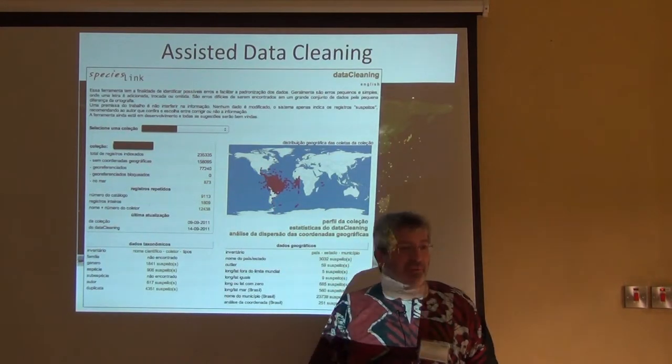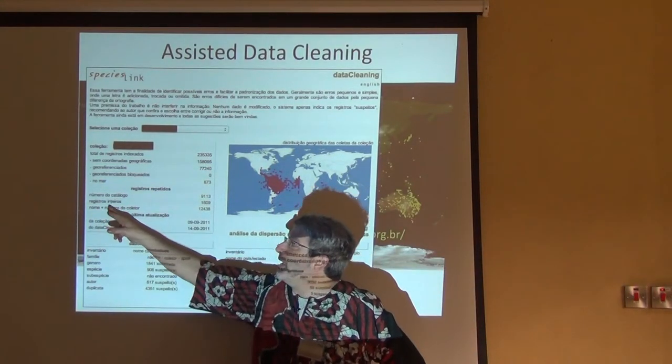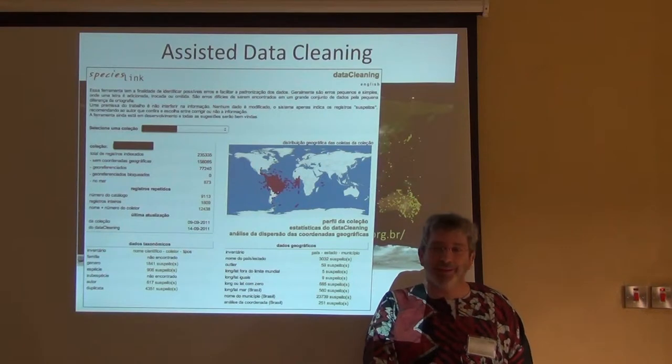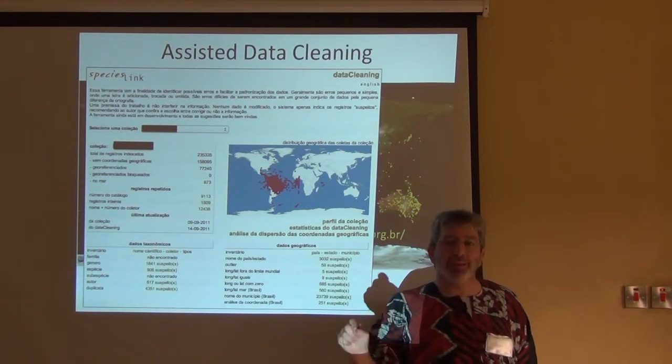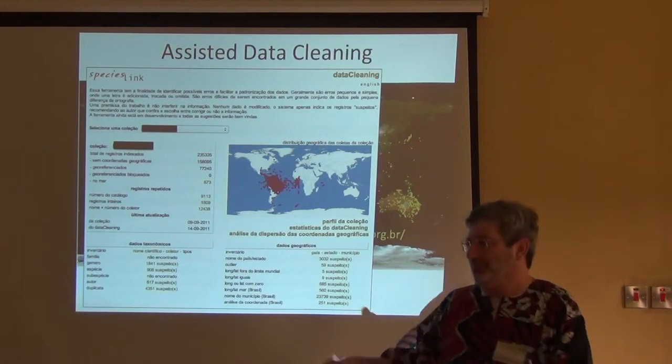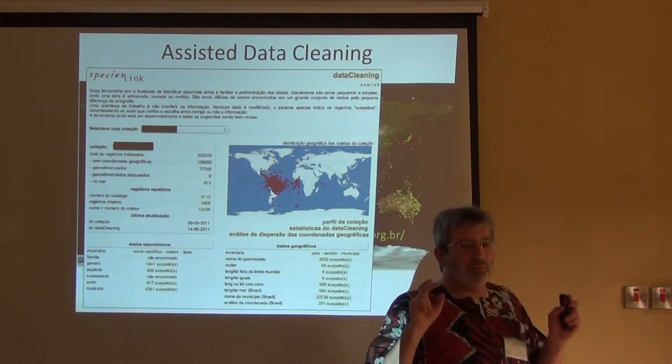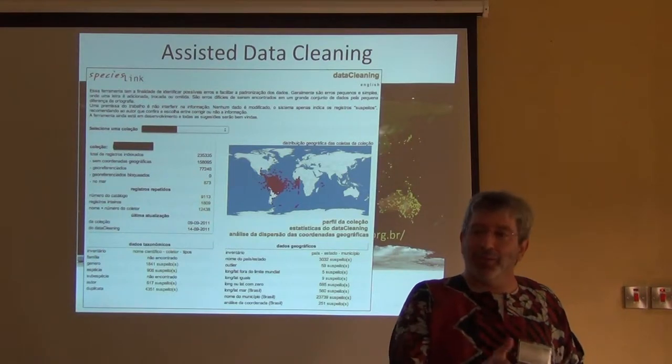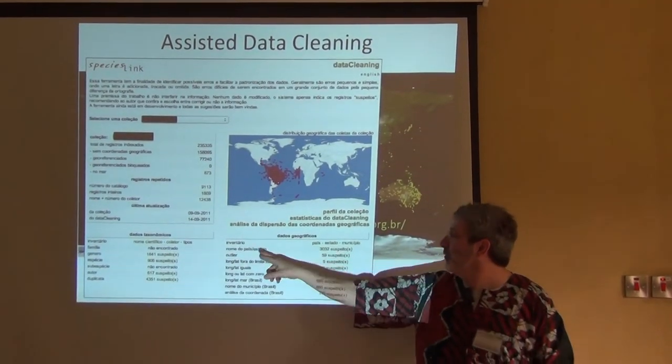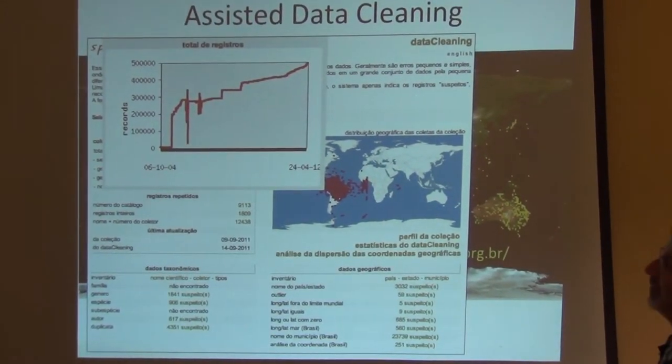How many records—the entire record—are duplicated and present twice, or how many name and field number of the collector are repeated in the data set. Those aren't necessarily wrong but they're probably more likely to be wrong than a record that doesn't repeat something. We have all of these little helps like here are 1,841 suspicious genera, which is to say they don't match taxonomic authority lists, or the name of the country and state might be something non-standard.